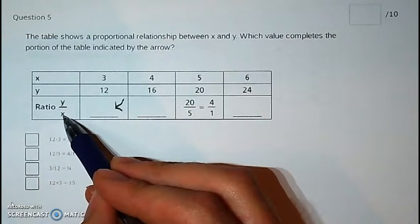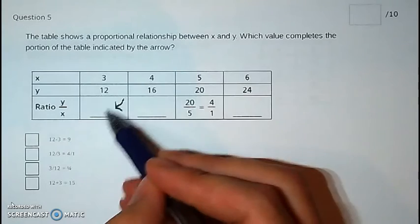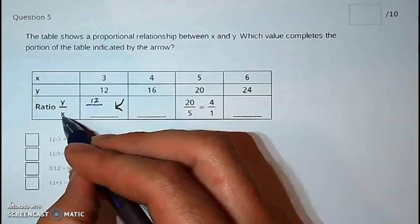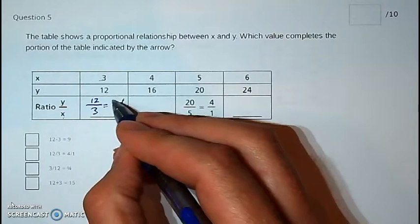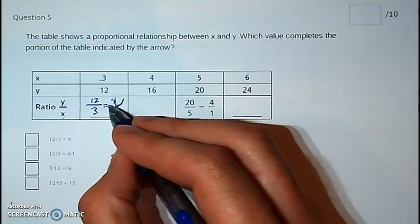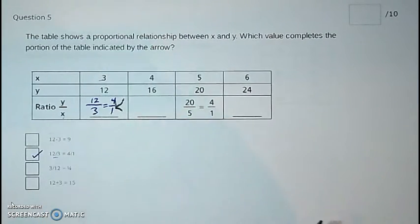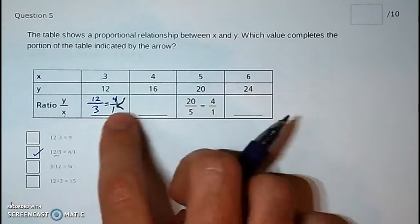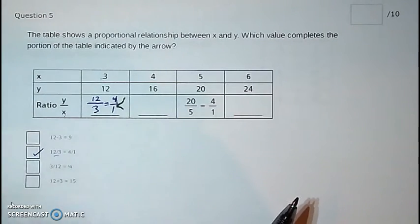The ratio of y divided by x is the constant of proportionality. Take your y value, which is 12, and divide by your x value, which is 3. 12 divided by 3 reduces to 4 over 1 — that's the second option. And that's true for the entire table: 16 divided by 4 is 4, 20 divided by 5 is 4, and 24 divided by 6 is 4.